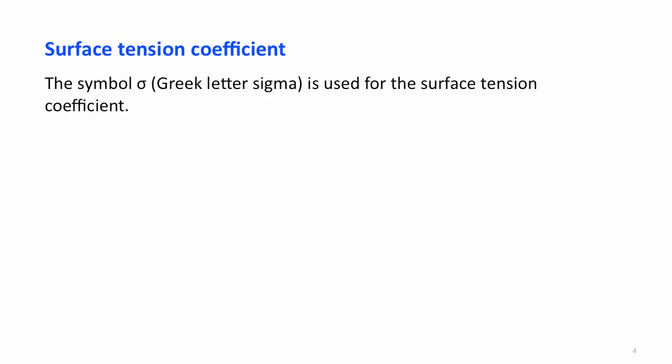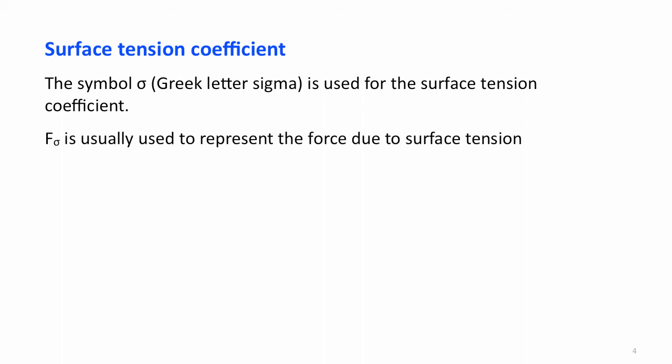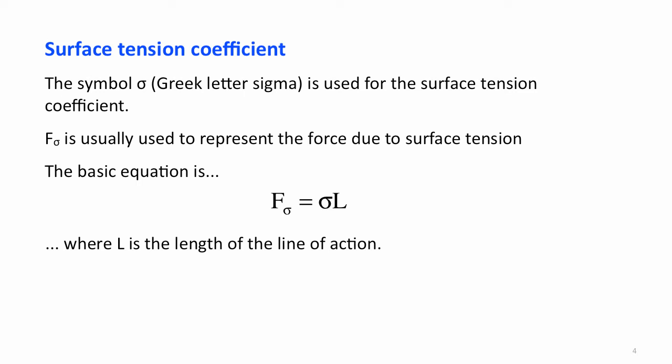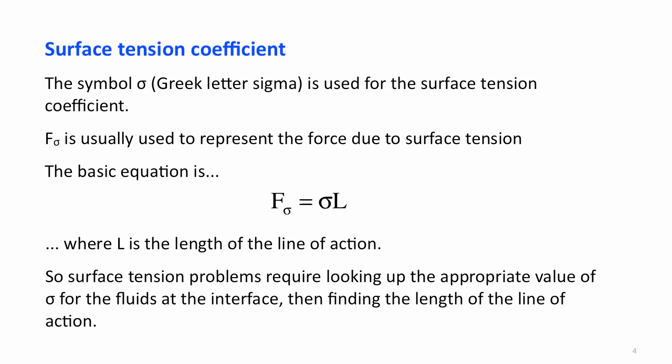Our surface tension coefficient is usually given the Greek letter sigma. F-sub-sigma is used to represent the force exerted by surface tension, and our basic equation is simply F_σ = σL, where L is the length of the line of action. In surface tension problems, we typically look up the appropriate value of sigma for the fluids at the interface, and then we have to find the length of the line of action.